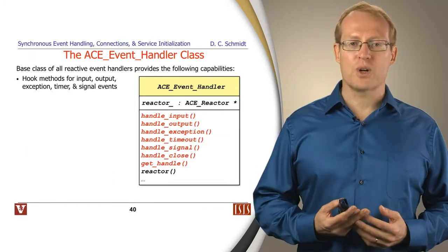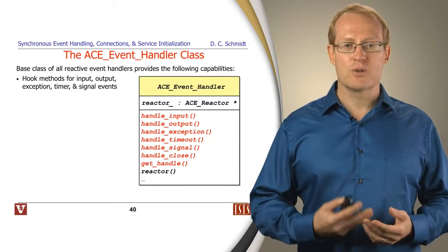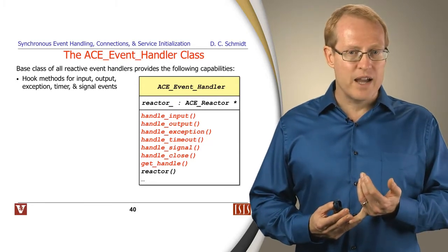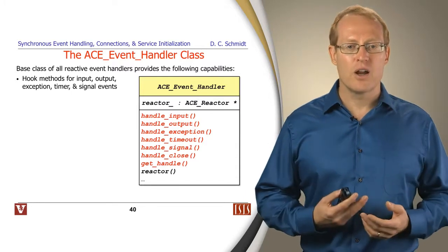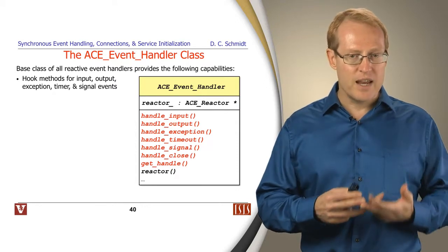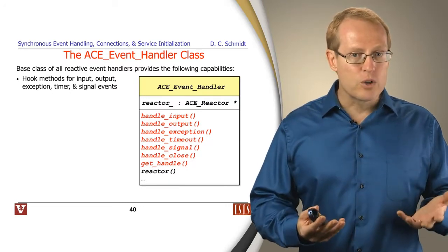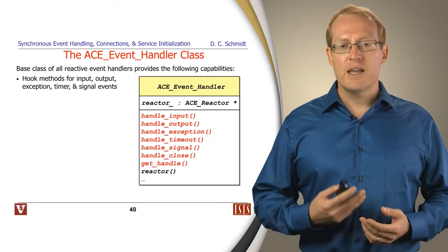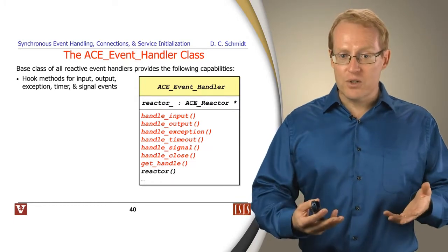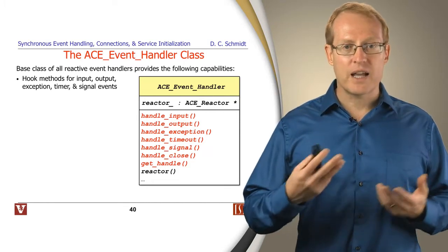Let's take a look at the ACE event handler class just to give you a feel for how this works. Keep in mind that other implementations of the reactor pattern will do slightly different things. There are Java implementations. There are implementations in other environments as well. The core idea here is to provide hook methods for each of the different types of events that may occur. As you can see in this diagram, we've got input events, things like incoming connections or incoming data. We have output events, which are typically used for learning when a connection has no longer been flow controlled, and now you can go ahead and send without blocking. We have exception events, which typically deal with things like out-of-band data delivery. We have timeouts, we have signals, we have other kinds of things as well. So those are the main hook methods that you would subclass and override depending on the kind of thing you're dealing with.